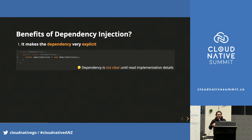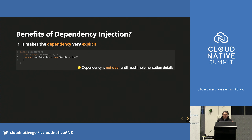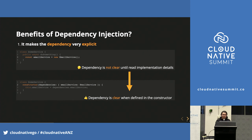First, it makes the dependency between classes very explicit. As shown in the previous example, EmailService is a dependency of SomeService. However, if we directly instantiate EmailService inside a method, the dependency is not that obvious. A person reading the code may not be able to figure out the dependency easily without digging deep into the implementation. By declaring the dependency in the constructor, code readers can understand the relation between classes much easier and more straightforward.